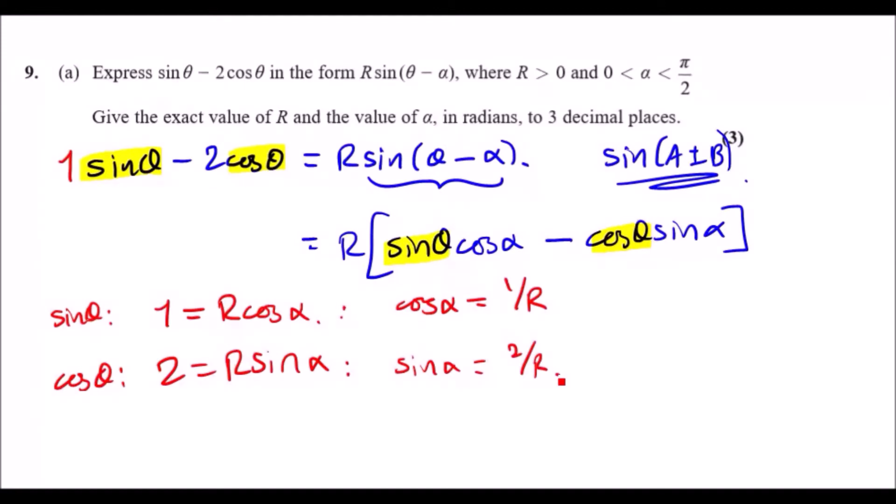Now thankfully with SOH CAH TOA we always work with right angle triangles and label each side appropriately. For sin and cos we can use SOH CAH and TOA. Sin tells us the equation is sin α equals opposite over hypotenuse, so opposite to hypotenuse is R. For cos it would be adjacent over hypotenuse, so 1/R.